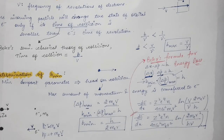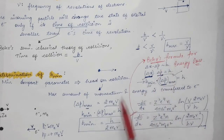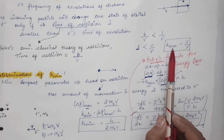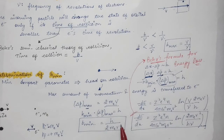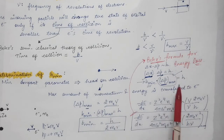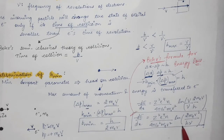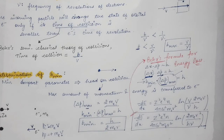After Bohr's formula, the scientists Bethe and Bloch corrected the values of b_maximum and b_minimum using relativistic theory. They inserted these corrected values into the formula, and the resulting expression is called the Bethe-Bloch formula.